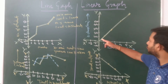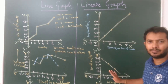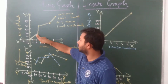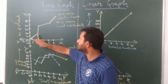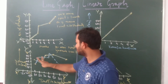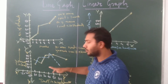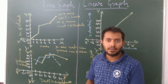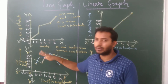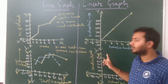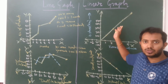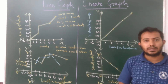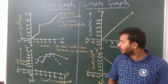In the line graph, you can see it is a collection of straight line segments joined together with turning points. In contrast, the linear graph is a single straight line segment without any turning or curving. That is the core difference between a line graph and a linear graph.